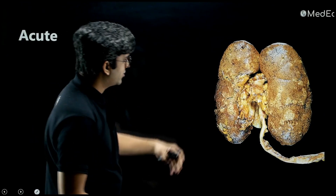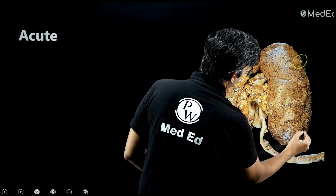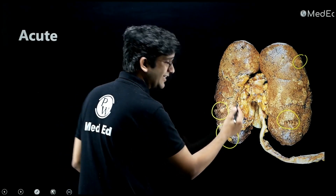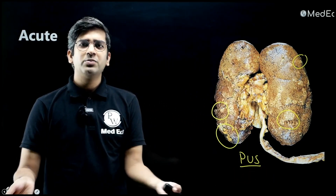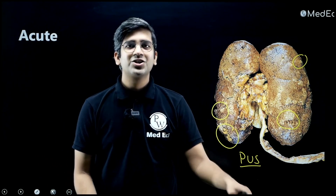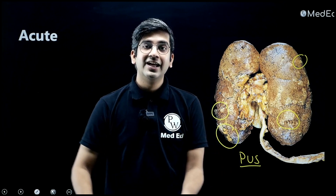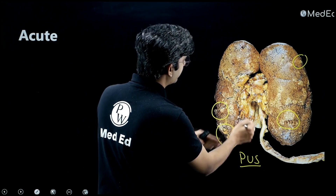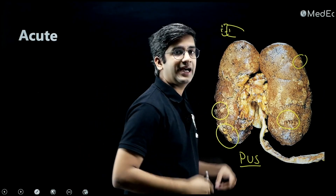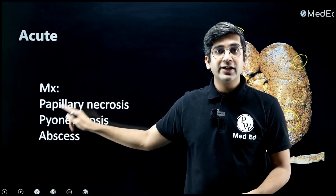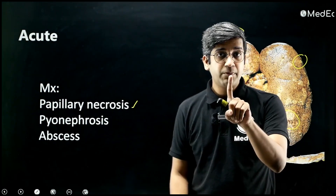In acute pyelonephritis, infection causes pus points — visible in the image from Robbins. In any infection under microscopy, you will undoubtedly see a neutrophilic infiltrate. The infection ascends via the ureter to the papillae, so the tip of the papillae is where maximum damage occurs. This gives a microscopic finding called papillary tip necrosis — very important.